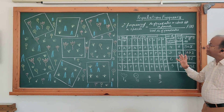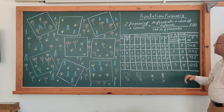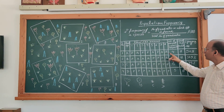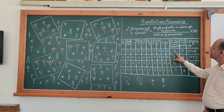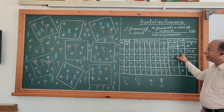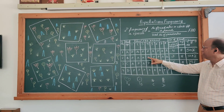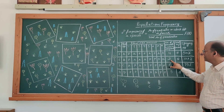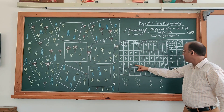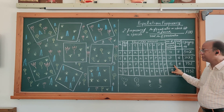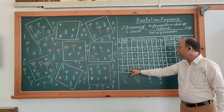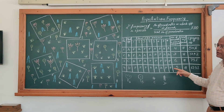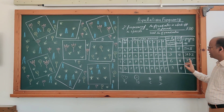Now we make the totals. Species A is present in 4 quadrants out of 8. Species B is present in 3 quadrants. Species C is present in 6 quadrants. Species D is present in 5 quadrants. The total number of quadrants is 8.